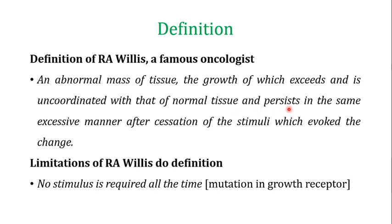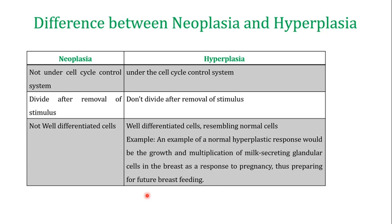Another important property in Welles' definition is that this excessive growth persists in the same excessive manner after the cessation of the stimuli which evoked the change. In normal cell division, a stimulus causes cells to divide; but in tumors, excessive division continues even after the stimulus is removed. One limitation of Welles' definition is that a stimulus is not always required — for example, mutations in growth factor receptors can lead to abnormal cell division even in the absence of a stimulus.